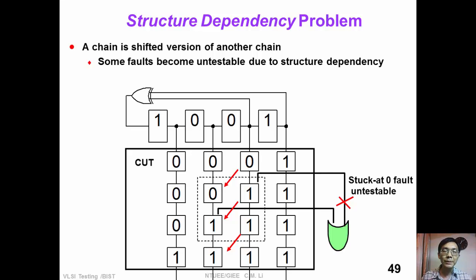This picture shows a simple STUMP architecture. We have an LFSR which generates test patterns for our circuit. This LFSR feeds four scan chains to the circuit under test.